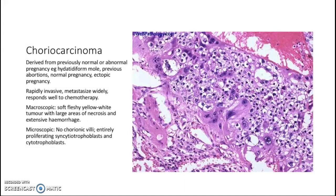Microscopically, you wouldn't see chorionic villi. It's entirely proliferating syncytiotrophoblasts and cytotrophoblasts. If you recall, the histology of chorionic villi is lined by trophoblasts — syncytiotrophoblasts and cytotrophoblasts — so in a choriocarcinoma it's composed entirely of these trophoblastic cells. This is an example of syncytiotrophoblasts, and the single cells visible here are the cytotrophoblasts. That's it for this presentation on pathology of female reproductive system. Thank you.